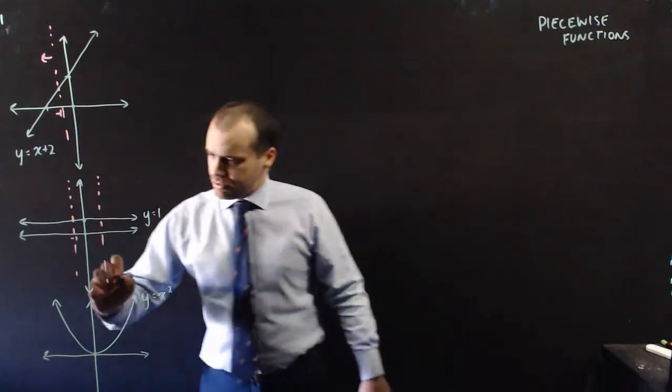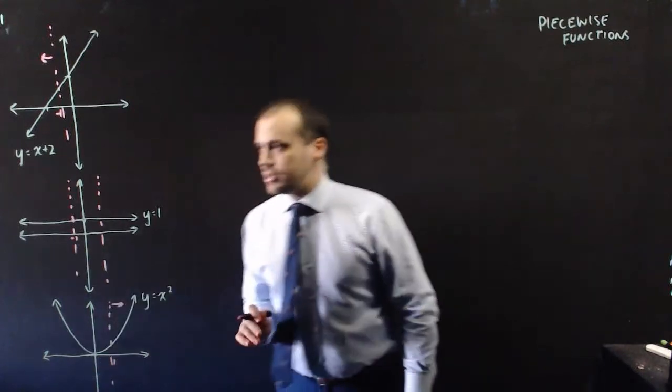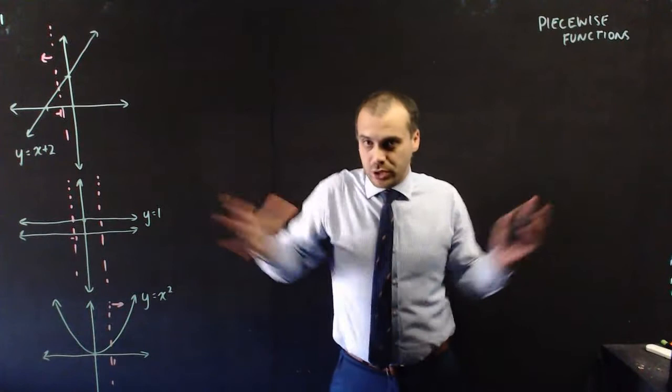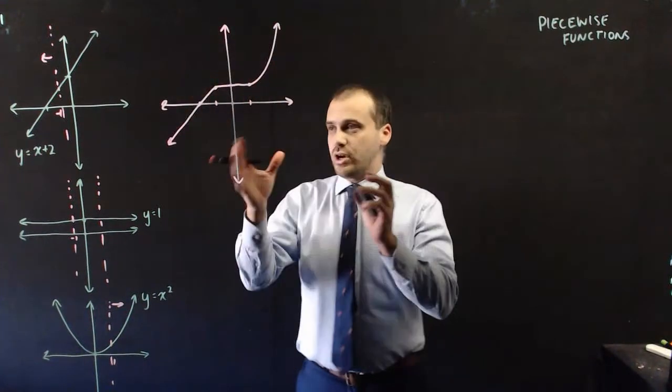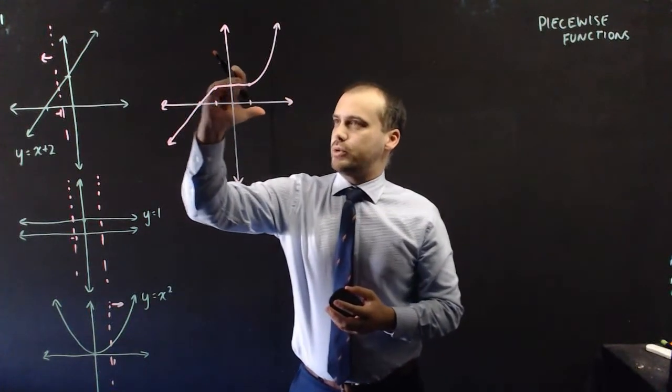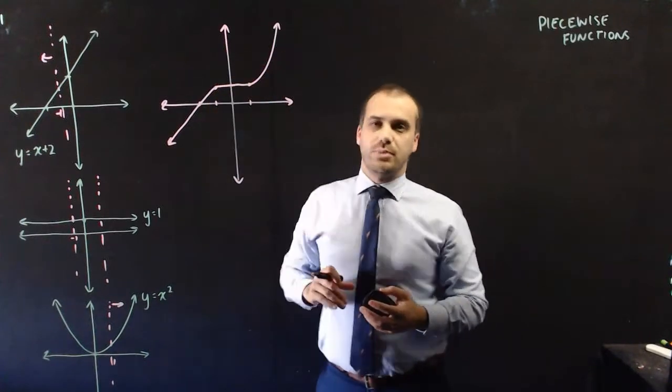And then for this graph here I'm going to choose everything beyond 1. I'm going to take these pieces and glue them all together into a single piecewise. And this is my Frankenstein function here. We've got y equals x plus 2 until we get to here, and then we have y equals 1 for this straight bit here, and then we have y equals x squared for this bit here.